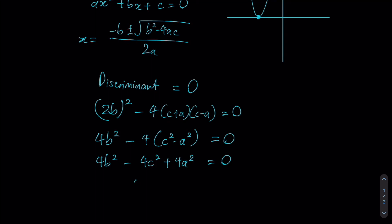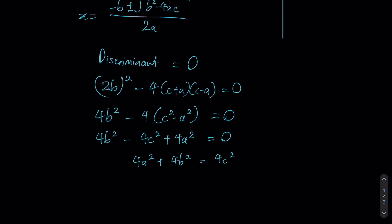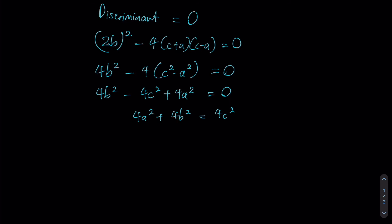Rearranging my terms, I should be able to get 4a² + 4b² = 4c². Since every term contains a 4, we can simply divide by 4 throughout to obtain this simple equation: a² + b² = c². Now does this equation look familiar? Well, it should, because this is exactly what the Pythagoras theorem is stating.